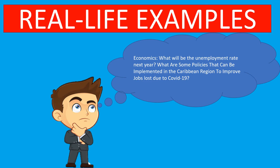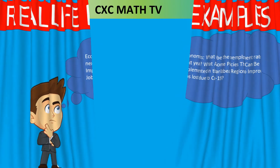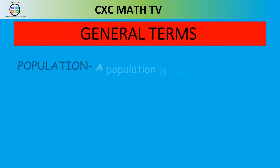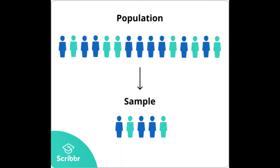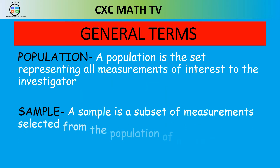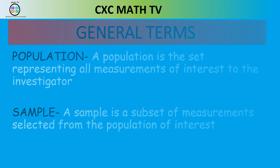Before we get into all we need to know about statistics, here are some general terms. A population is the set representing all measurements of interest to the investigator — that's the whole general group we need information about. A sample is just a subset that we're going to take from the population.